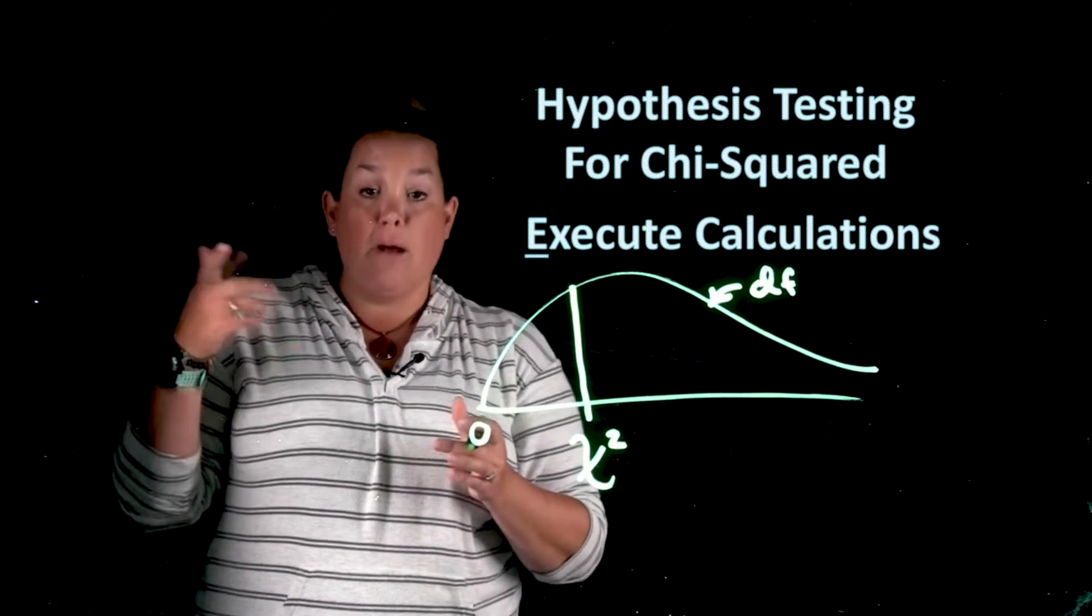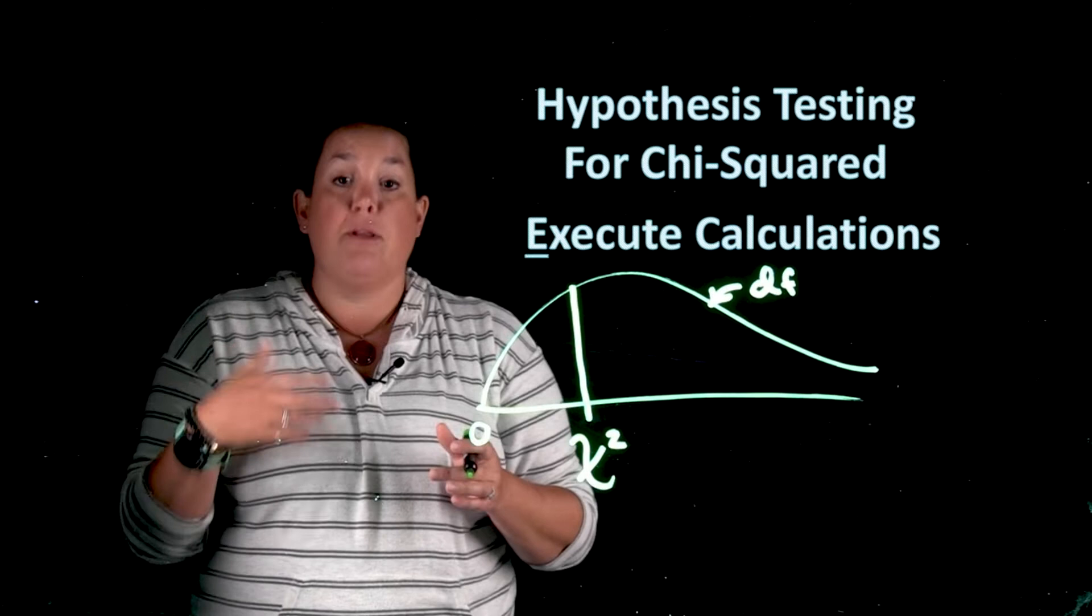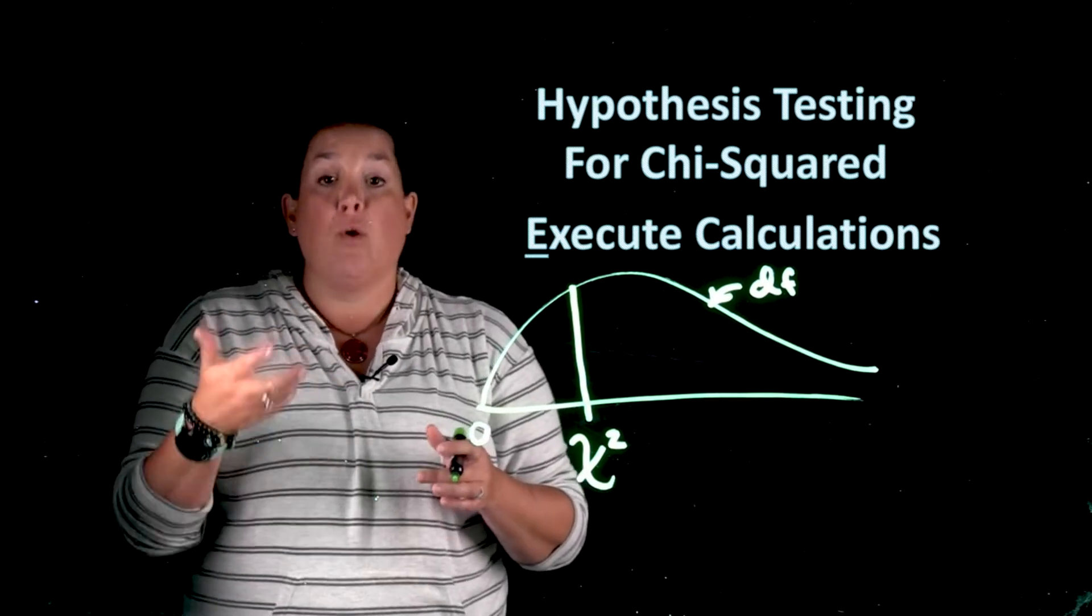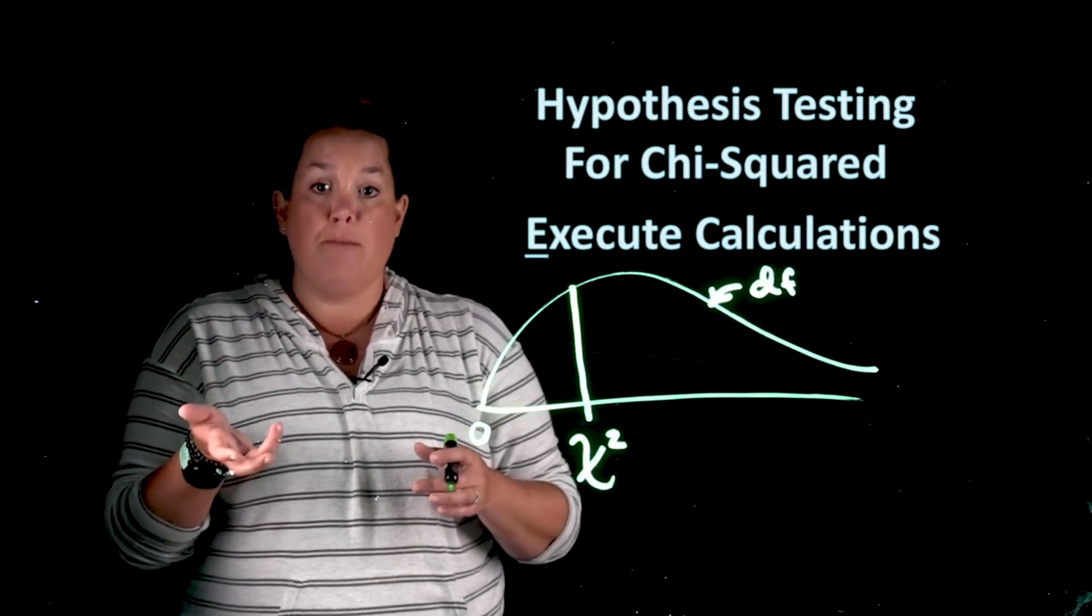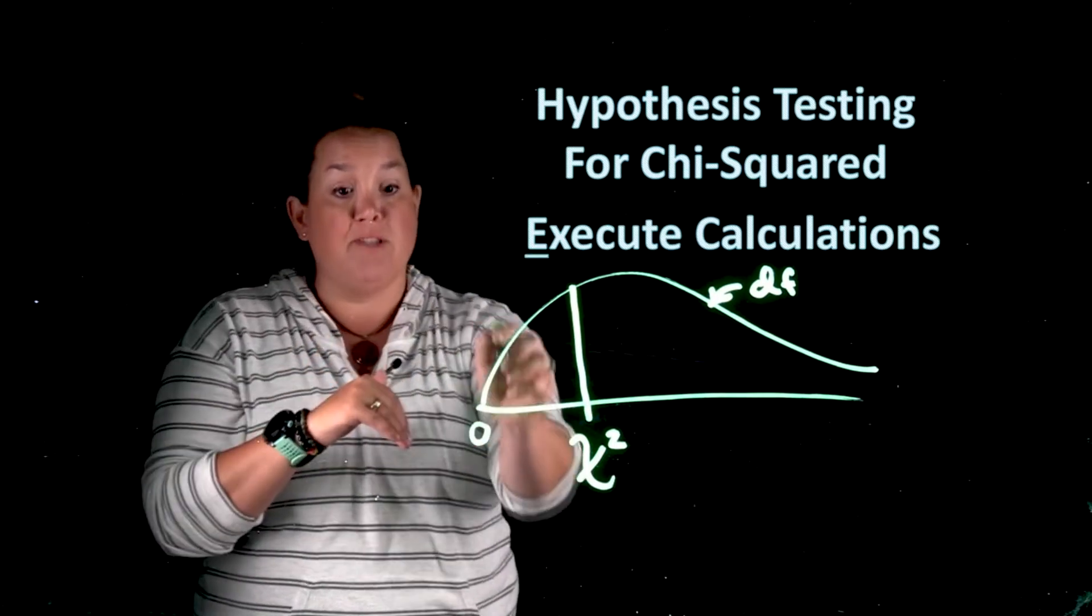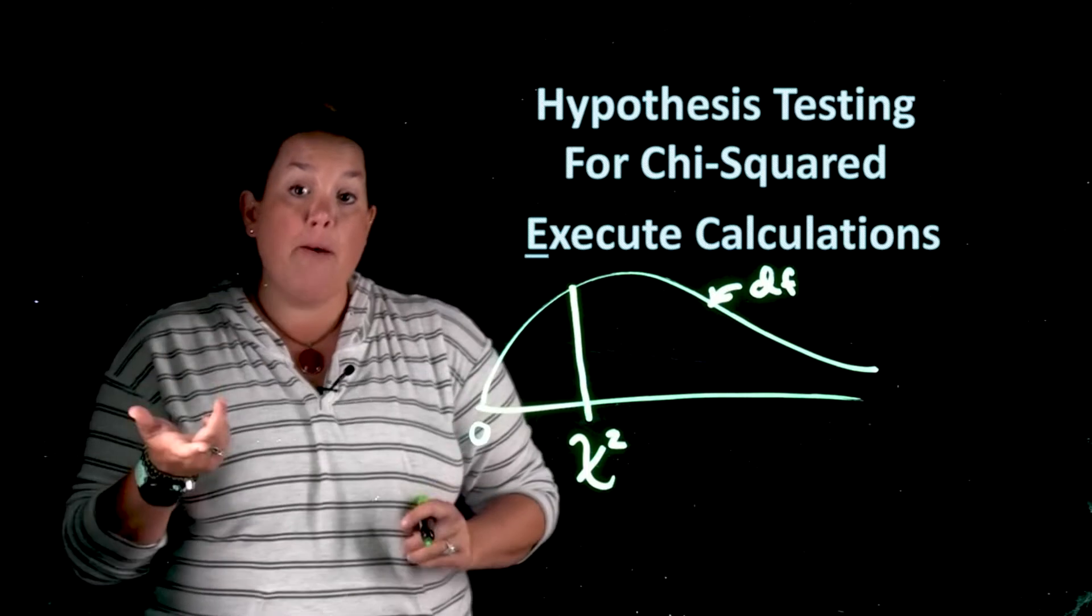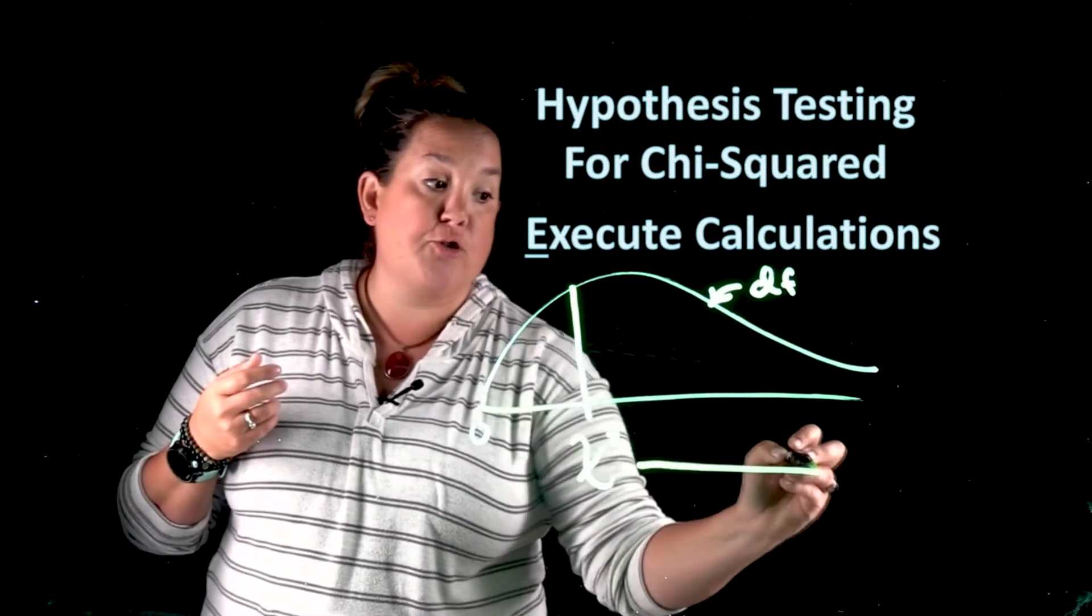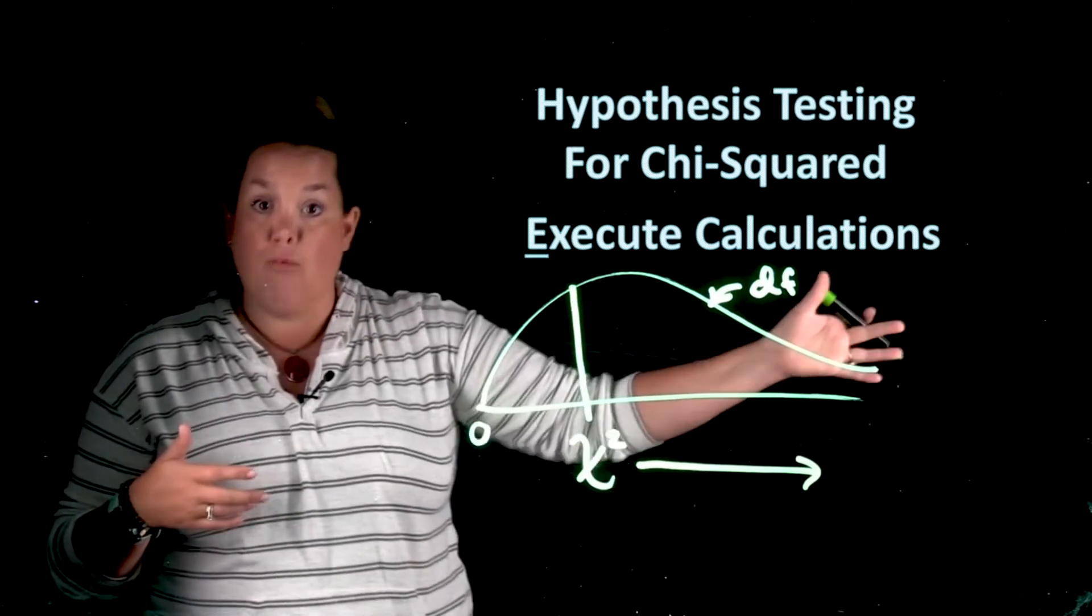Second part, I said a p-value is going to be the probability of finding what you did or something more extreme. Now we already said that the not extreme or the no relationship is going to be close to zero. So that means for these problems, the more extreme is always going to be the area to the right of chi-squared.